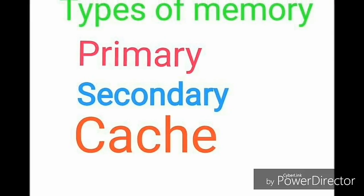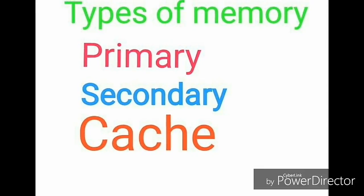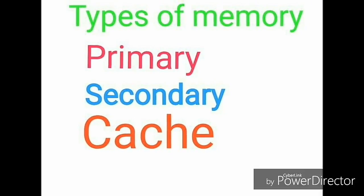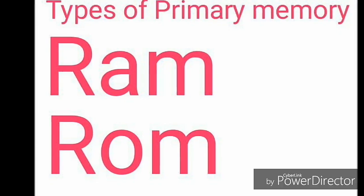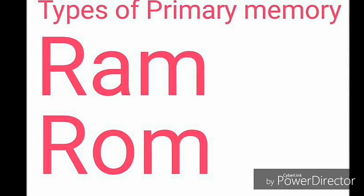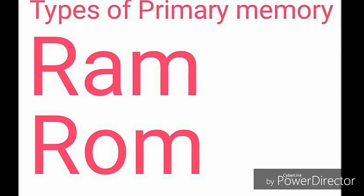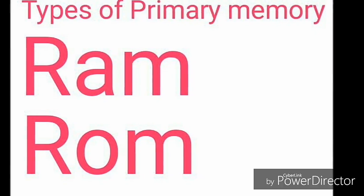Types of memory: primary, secondary, and cache. Types of primary memory: RAM and ROM.